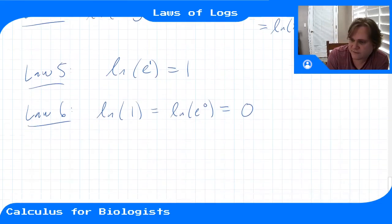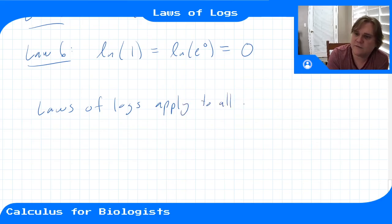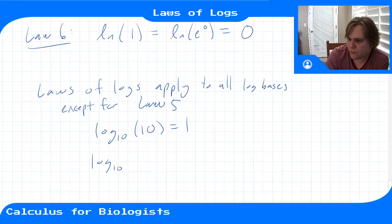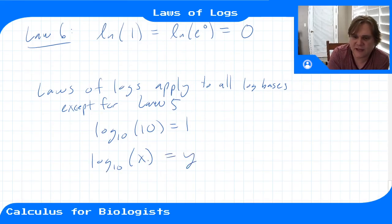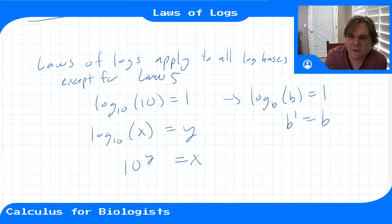Okay, and so the laws of logs apply to all log bases, except for law number 5. So if I had log base 10 of 10, that gives me 1. So log base 10 is another kind of common one, and this basically asks the question, what power of 10 gives me this number x? So log base 10 of x equals y tells me that 10^y is x. Okay, and so you could have any number down here. And then your law 5 would just be log base b of b equals 1, because b^1 is equal to b. So law 5 is the only law that changes when you're doing the law of logs for a different base logarithm.